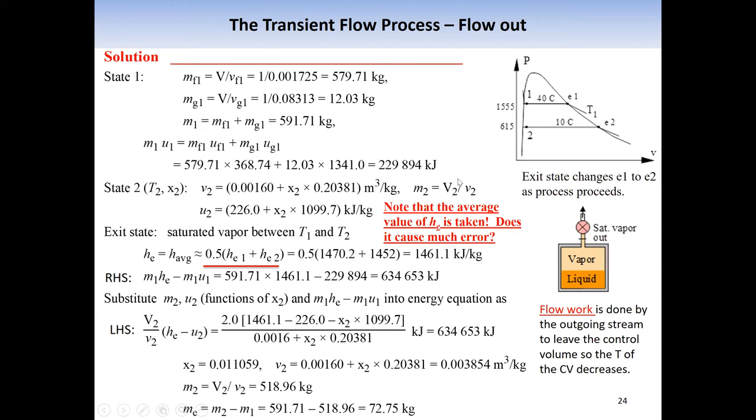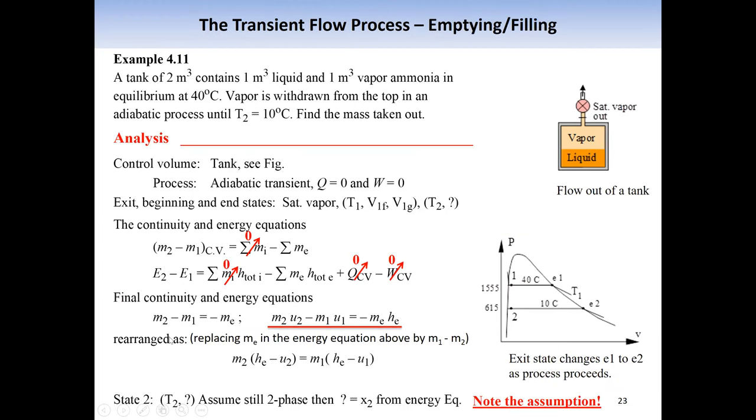Moreover, m_2 can be expressed as a ratio of total volume divided by specific volume. Total volume for a rigid container won't change. It's the same as the initial total volume. So, therefore, we can substitute these three expressions into the equation we have been talking about.